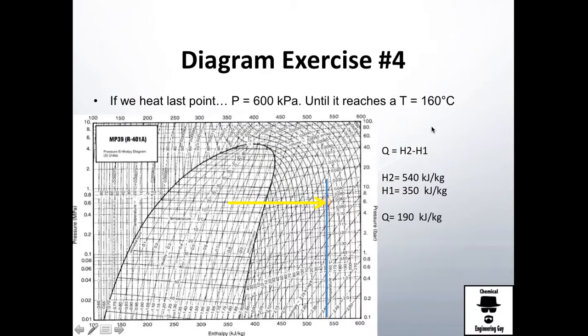That will give you the change in enthalpy, which is of course just the difference, 190 kilojoules per kilogram. And you will have, you already have the heat added, you have the final enthalpy, you have the final temperature, you have the actual pressure, and you know it's a superheated vapor because it's in this region or area. And yeah, essentially that's everything on the exercise, guys.